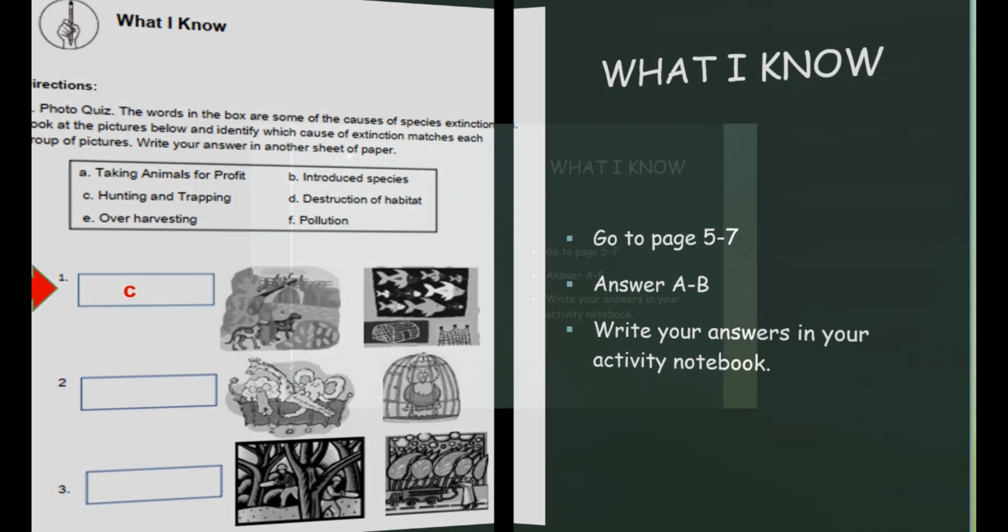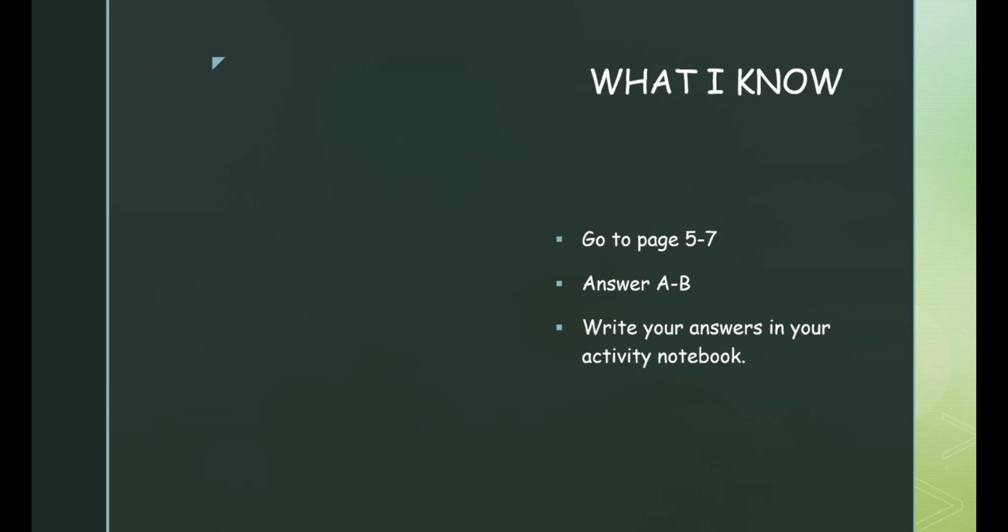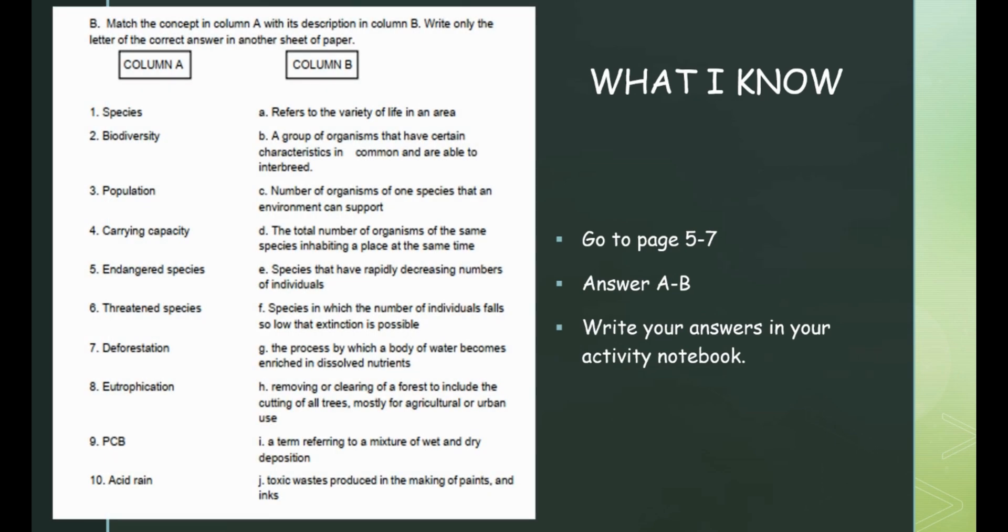For letter B, match the concept in column A with its description in column B. Write the letter of the correct answer in your activity notebook. For item number one, species. What would be the best description for this concept? Correct, it's letter B. A group of organisms that have certain characteristics in common and are able to interbreed.